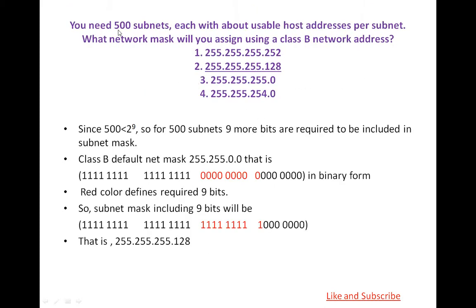Third question: If we need 500 subnets, each with about the same number of hosts per subnet, what network mask should we use, assigned using a Class B network address? There are 4 options. Since 500 is less than 2^9, for 500 subnets, 9 more bits are required to be included in the subnet mask. For Class B, the default subnet mask has the first two bytes as the network ID and the last two bytes as the host ID. We convert this address into binary form and add 9 bits more, then convert back to decimal form and we get the required answer: 255.255.255.128.